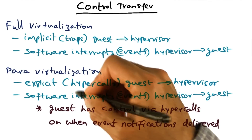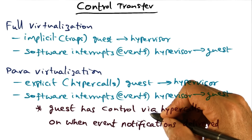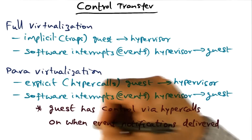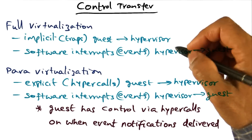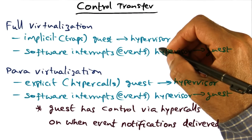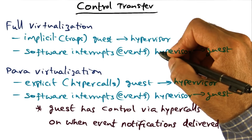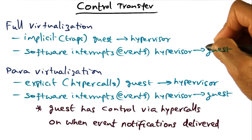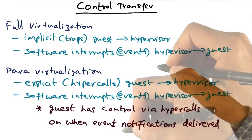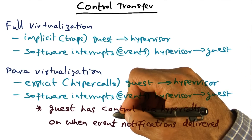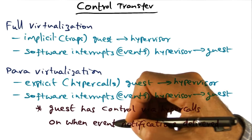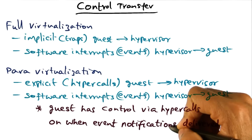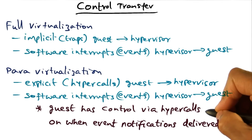The additional facility in a para-virtualized environment is that the guest has control via hypercalls on when event notifications need to be delivered. In the case of full virtualization, since the operating system is unaware of the existence of the hypervisor, events are going to be delivered as and when they occur. But in a para-virtualized environment, the guest via hypercalls can indicate to the hypervisor: leave me alone, don't send me any event notifications now — or: now is a good time to send me event notifications.